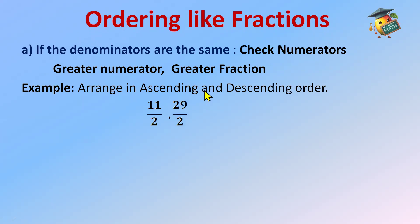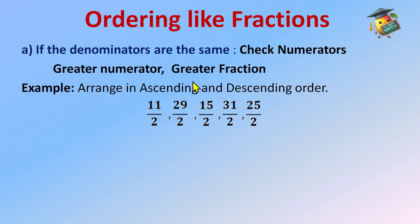Let's see this with an example. The question asks us to arrange fractions in ascending and descending order. We have several fractions here. You can see the denominators are all the same, so we check the numerators. The rule is: greater the numerator, greater the fraction. The greatest numerator is 29 — wait, actually 31 — so that is the greatest fraction.